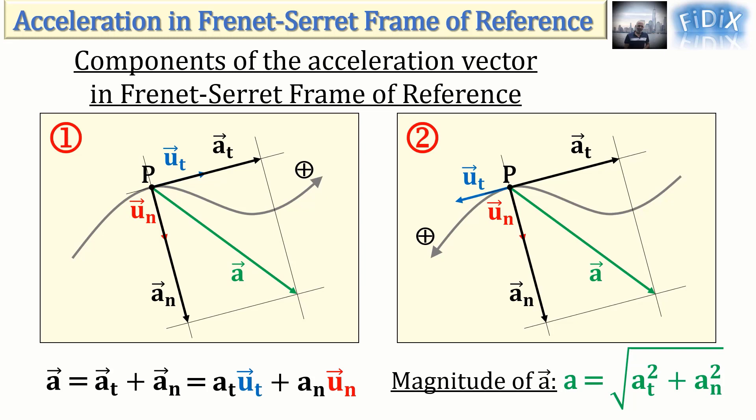Note that in figure 1, vectors a_t and u_t have the same direction, thus the scalar component a_t is positive. Whereas in figure 2, vectors a_t and u_t have opposite directions, thus the scalar component a_t is negative.